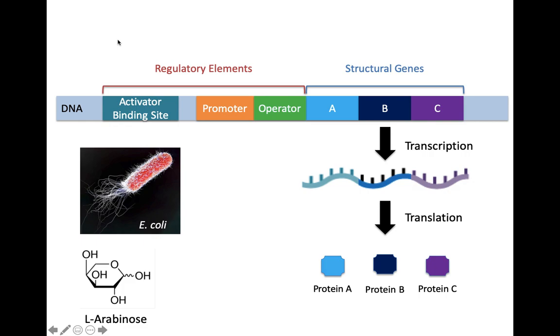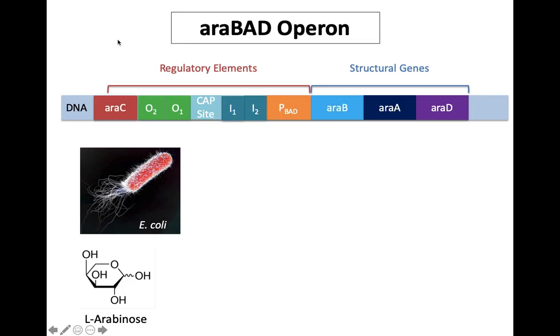L-arabinose can be broken down by the araBAD operon into D-xylose 5-phosphate, which will then be further metabolized in the cell.